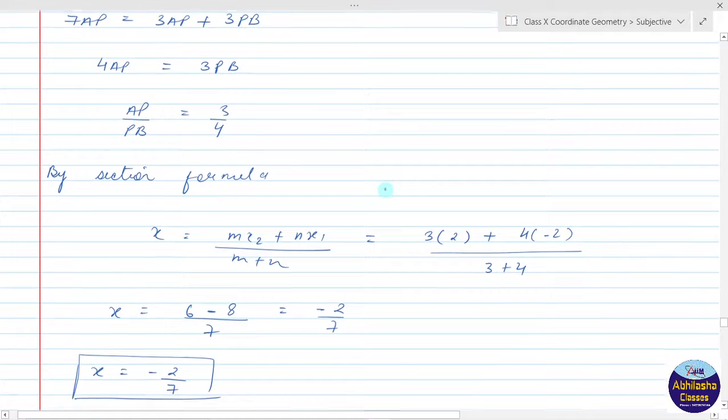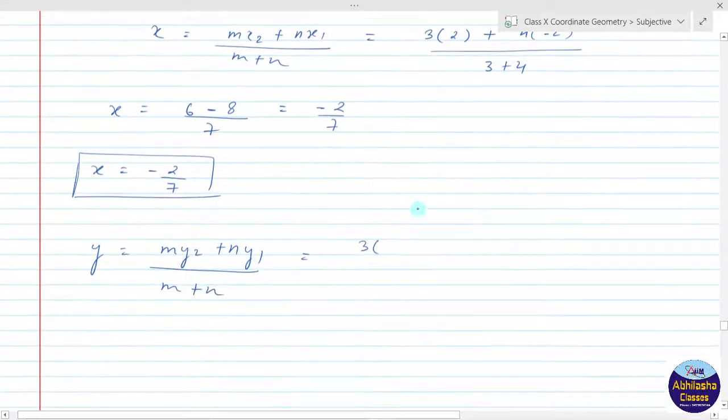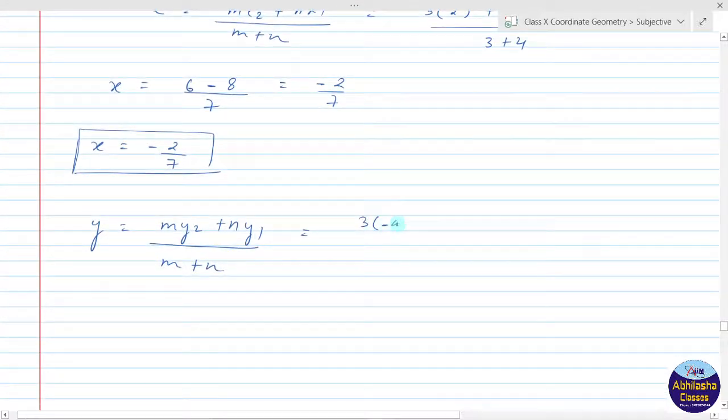m is 3 times y₂. Now y₂ is -4 and y₁ is -2. So y₂ is -4 plus n, which is 4 times y₁. So y₁ is -2 over (m + n), that is 7.